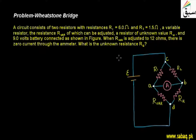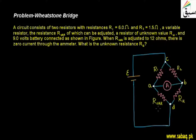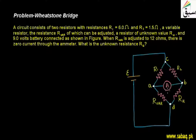What are we asked to find? When R-variable is adjusted to 12 ohms, there is zero current through the galvanometer. What is the unknown resistance R-U? The variable resistor's resistance can be varied, and we have adjusted it to 12 ohms. At this setting, the galvanometer reads zero current.